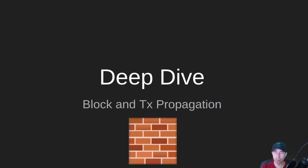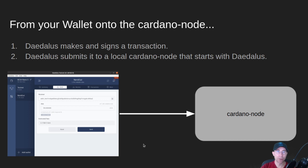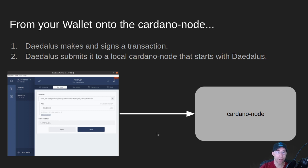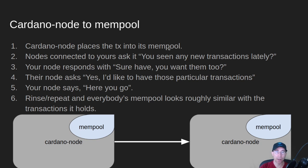We're talking about block and transaction propagation — how those transactions make it into blocks and get around the network. The first thing that happens is your wallet makes a transaction and signs it. It uses your keys, signs a transaction, and then locally behind Daedalus it's running software called Cardano Node. That's the same Cardano Node that all the stake pool operators and anybody talking on the Cardano network has an instance of. Cardano Node takes the transaction and puts it into something called its mempool — a spot in memory where it holds all the various transactions it's seen.